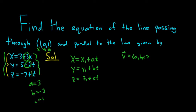So the vector (3, -2, 1) is parallel to this line here. Our line is parallel to this line here. Therefore, our line is also parallel to this vector.